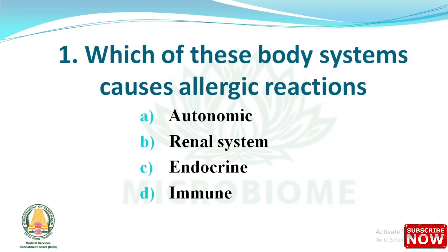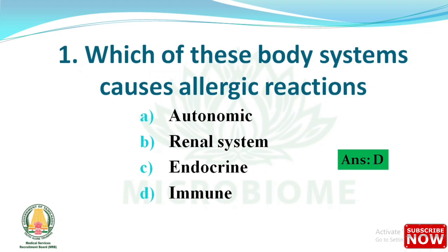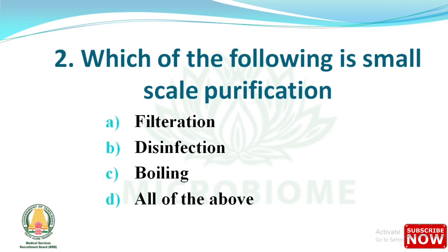Question 1: Which of these body systems causes allergic symptoms? Options: autonomic renal system, endocrine, and immune. The right answer is option D - immune. Allergies are classified into Type 1 to Type 4. In Type 1 allergy, it lasts 1 to 2 hours and is IgE-mediated; mast cells produce histamine and interact with IgE, causing the allergic reaction. Type 2 and Type 3 cause delayed allergies lasting 4 to 6 hours. Type 4 lasts 6 to 24 hours and involves cellular hypersensitivity, with the reaction taking place in lymphocytes.